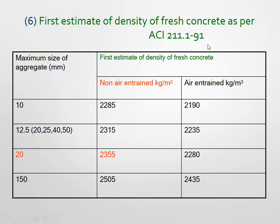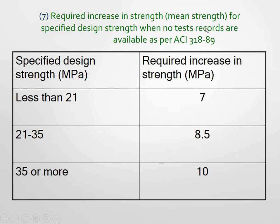Table 6 gives the first estimate of density of fresh concrete. If the maximum size of aggregate is 10 mm, the density of non-air-entrained concrete is 2285 kg/m³; for air-entrained concrete the density is reduced. Maximum aggregate sizes listed are 10, 12.5, and 20 mm. Table 7 gives the required increase in mean strength over specified design strength when no test records are available. If design strength is less than 20 MPa, increase by 7; for 21 to 35 MPa, increase by 8.5; for more than 35 MPa, increase by 10.